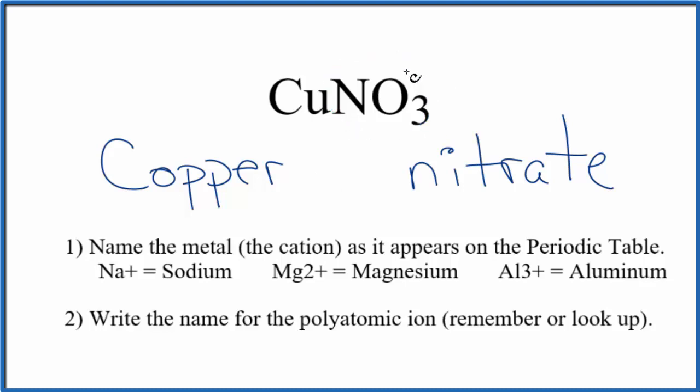So the nitrate ion has an ionic charge of 1 minus. For this to equal 0, the copper has to be 1 plus. So the ionic charge on the copper, 1 plus, we write copper, Roman numeral 1, in parentheses. Copper 1 nitrate.